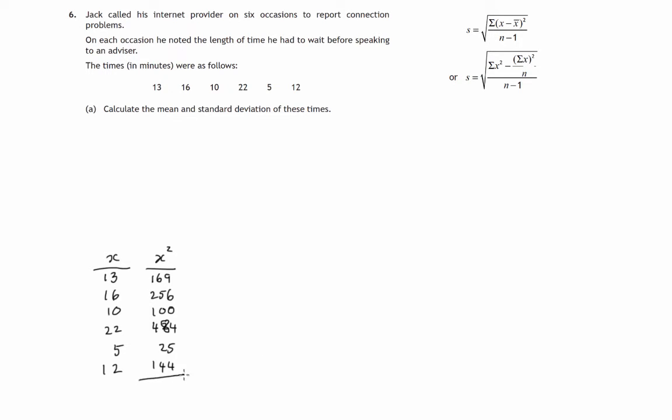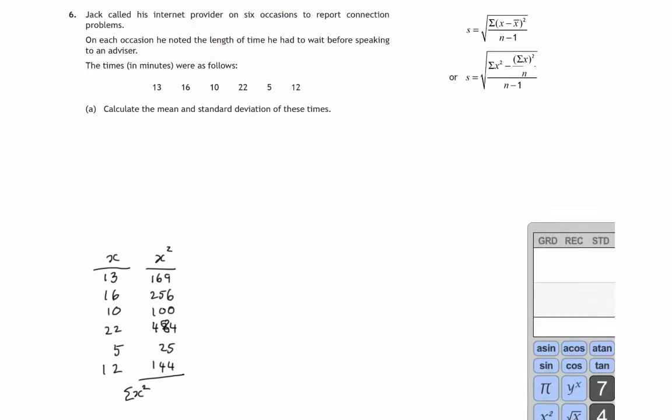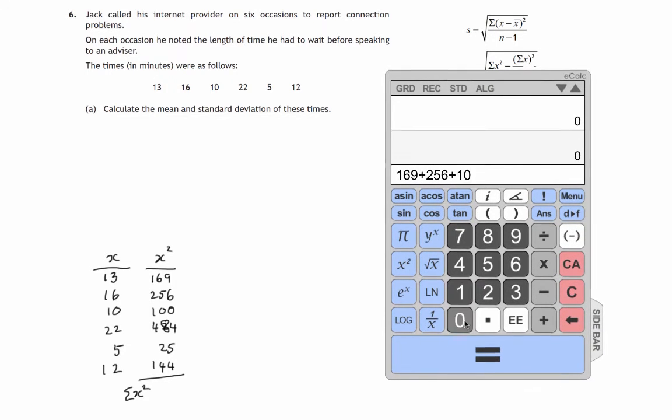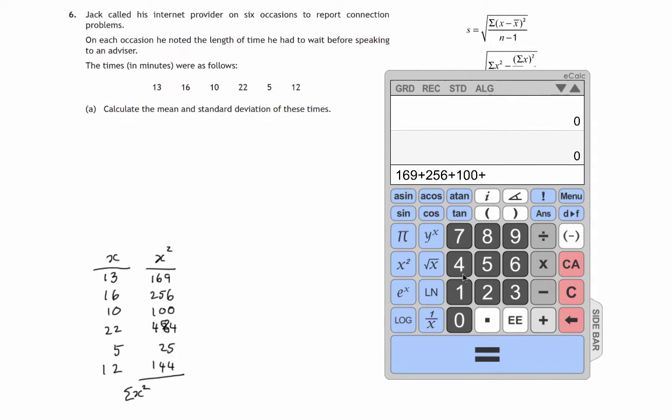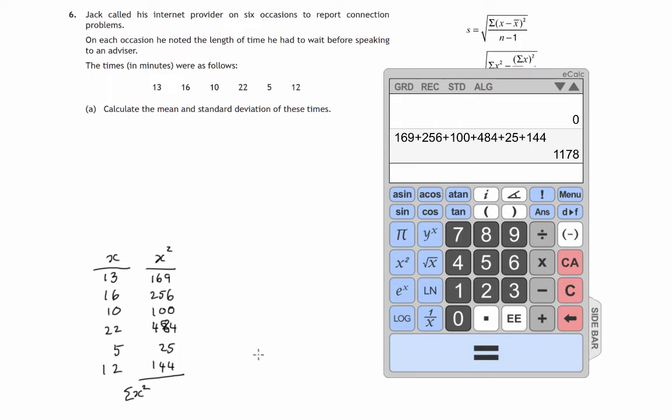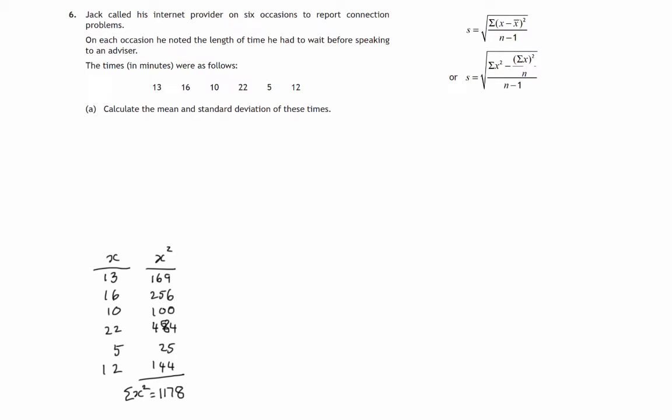And so the total of these values, let's do that in the calculator: 169 plus 256 plus 100 plus 484 plus 25 plus 144 comes to 1178. So that's the sum of the squares of these data values. We've also got here the sum of the data values. I can't quite remember what that was. That's 29, 39, 61, 66, 78.